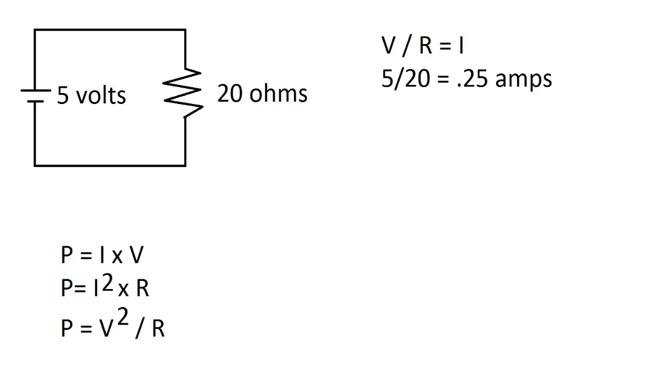So as I said before, power equals current times voltage, power equals current squared times resistance, and power equals voltage squared over resistance.